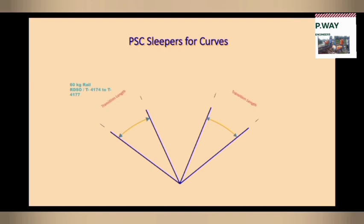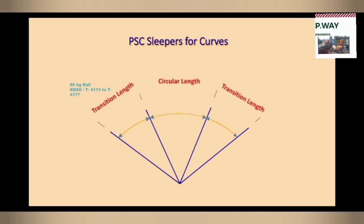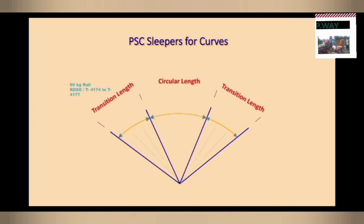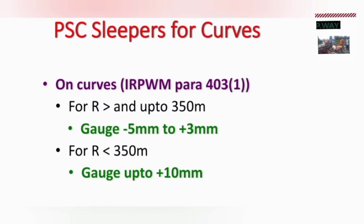The curve consists of three portions: the entering transition portion, the middle circular portion — where the complete circular geometry is applied — and the exit transition portion. The entry and exit transition portions are provided so that sudden turns are avoided and a gradual transition is given to the curve.